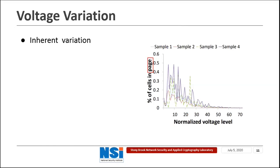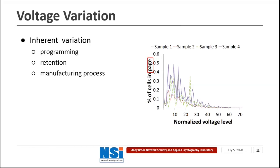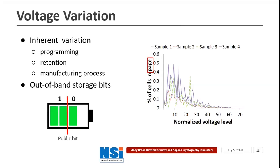As we can see in this figure, the distribution of voltage for the cells in one page is shown here, and we can see that for these four pages the distribution actually varies a lot. This variation in gate voltage is due to several reasons such as programming, retention, and the manufacturing process, and this is unpredictable. So when we store our out-of-band storage bits in NAND Flash, the gate voltage changes under this variation from inherent factors. In this case, the adversary will not know whether the change of voltage is due to inherent variation or because we are storing extra out-of-band storage bits in the disk.